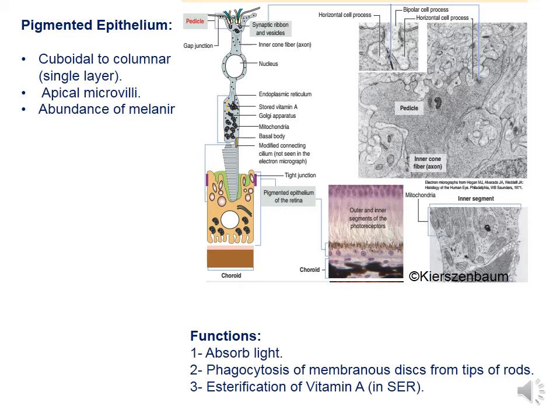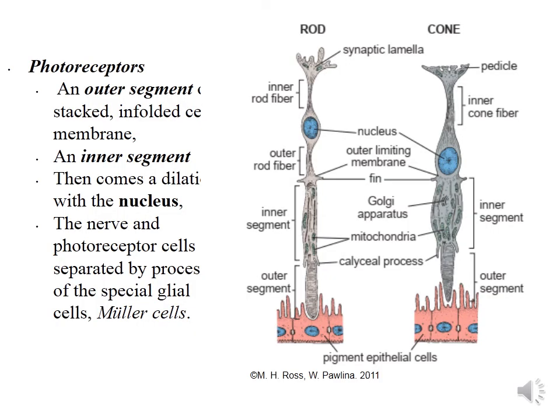The retinal pigment epithelium shows coloration due to bound melanin within the cells. Pigment cells are cuboidal or columnar, have microvilli on the apical part, and form a single layer. The functions of the pigmented epithelium include absorption of light, phagocytosis of membranous discs of rods and cones, and esterification of vitamin A. Photoreceptors consist of rods and cones. Rod cells are elongated cylindrical bipolar cells consisting of an inner and outer segment, a nuclear region, and a synaptic region. The outer segment is separated from the inner segment by a constriction (cilium). The outer segment is composed of numerous flattened membranous discs which are not continuous with the plasma membrane; they contain the visual pigment rhodopsin.